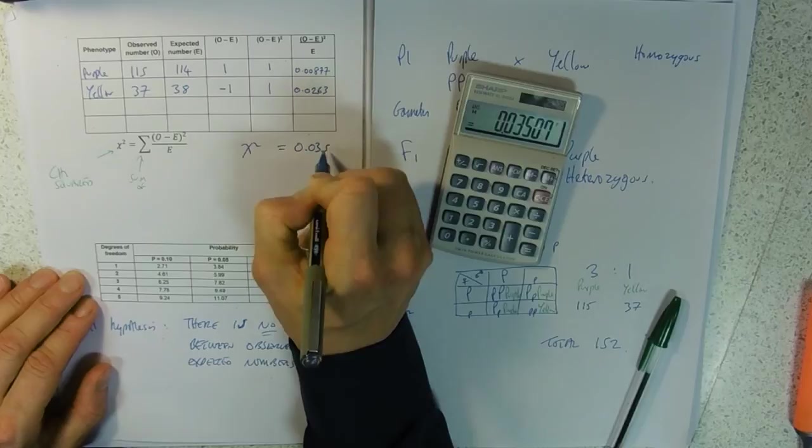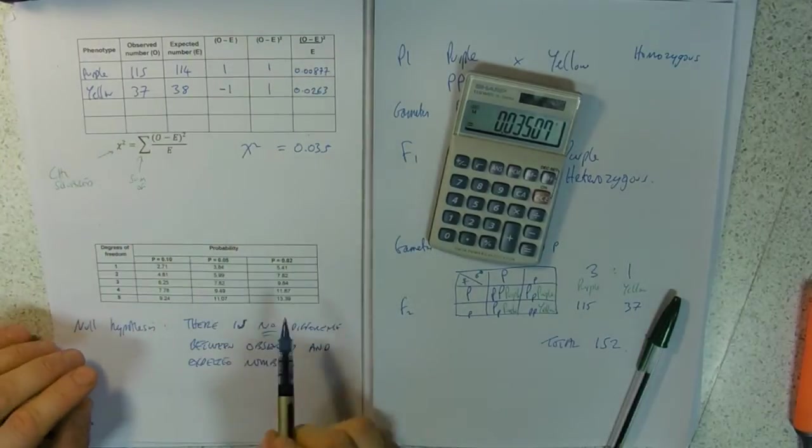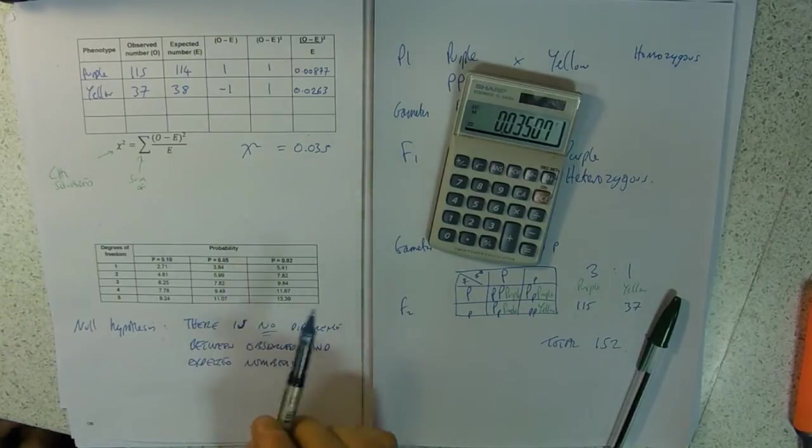0.00877 plus 0.0263, so chi-squared is 0.035. I've rounded these numbers a little bit, but that's probably close enough for now.